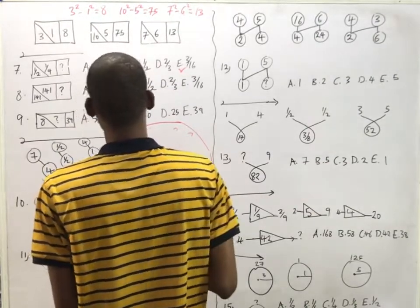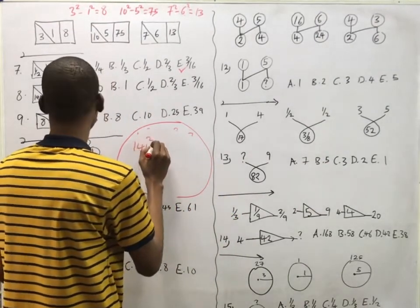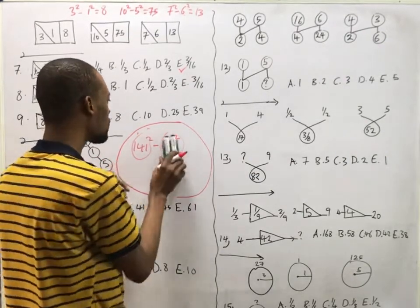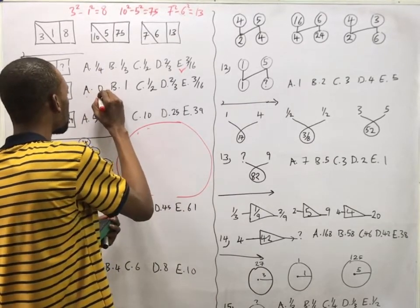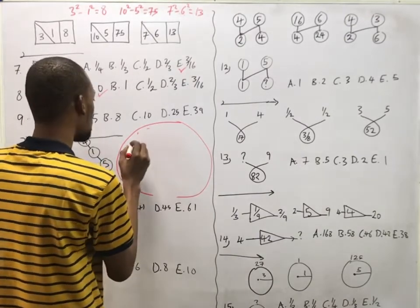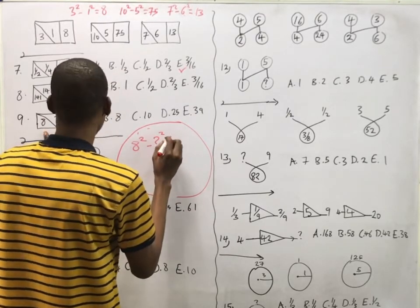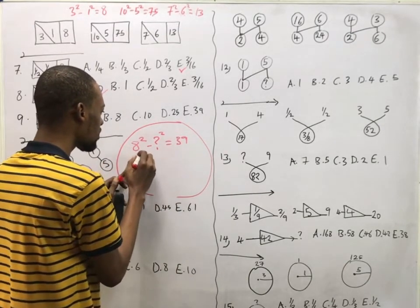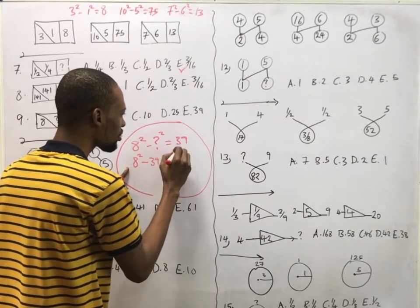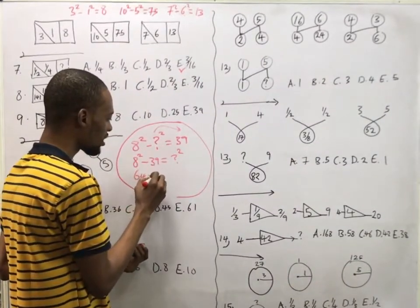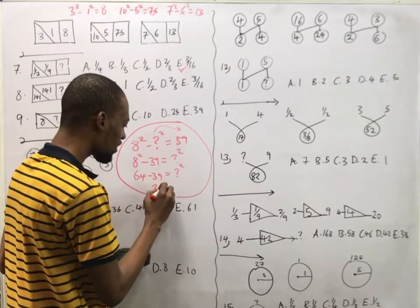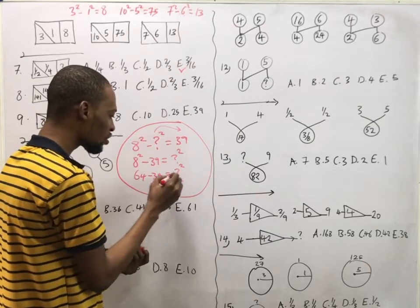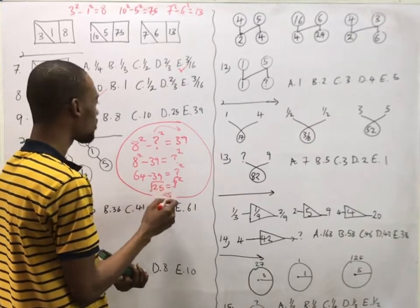Now the next one is simply 141 squared minus 141 squared. Obviously, since it's the same value squared minus itself, the answer is 0. For question 9: 8 squared minus the unknown squared equals 39. So the unknown squared equals 8 squared minus 39, which is 64 minus 39, equals 25. Taking the square root of both sides, the unknown is 5.